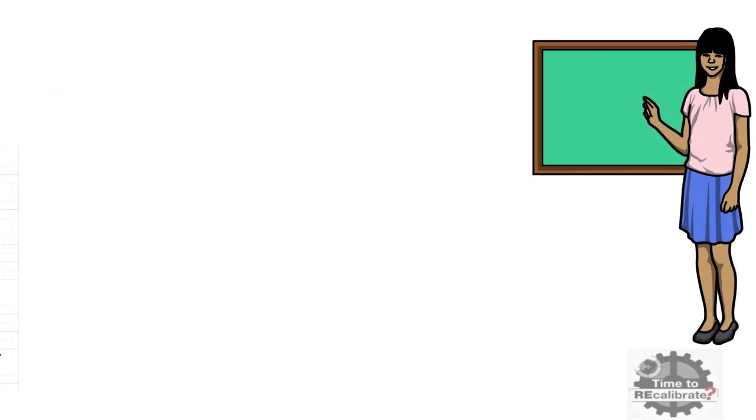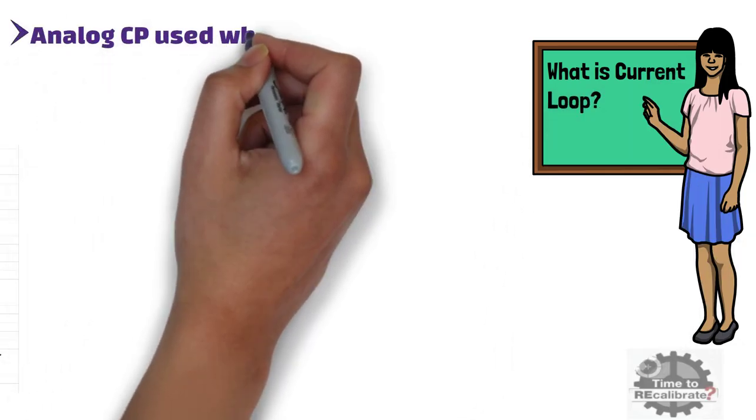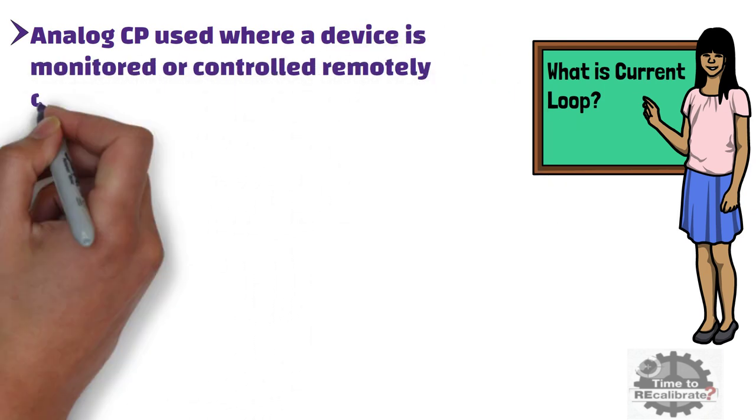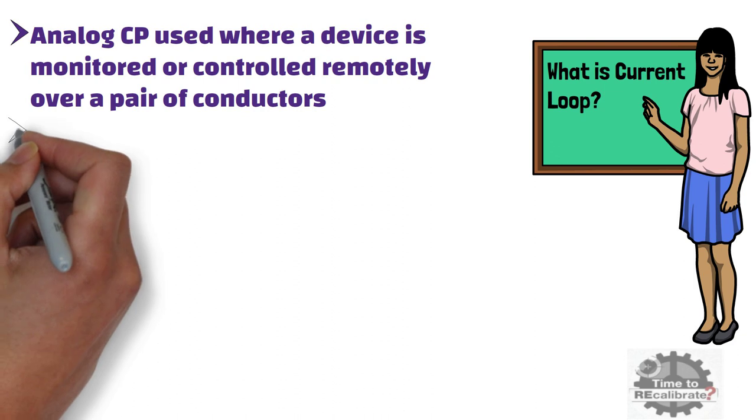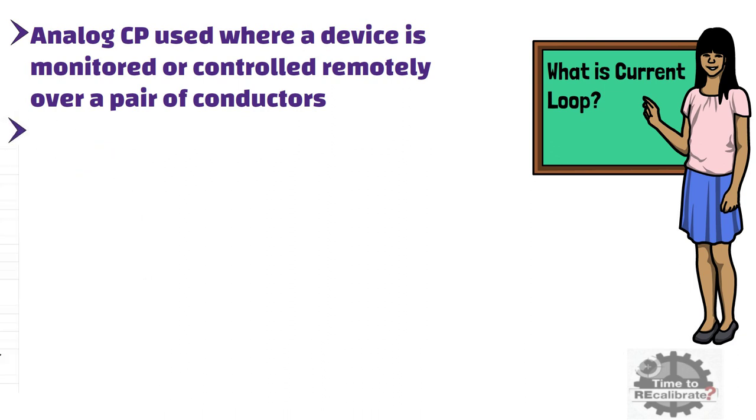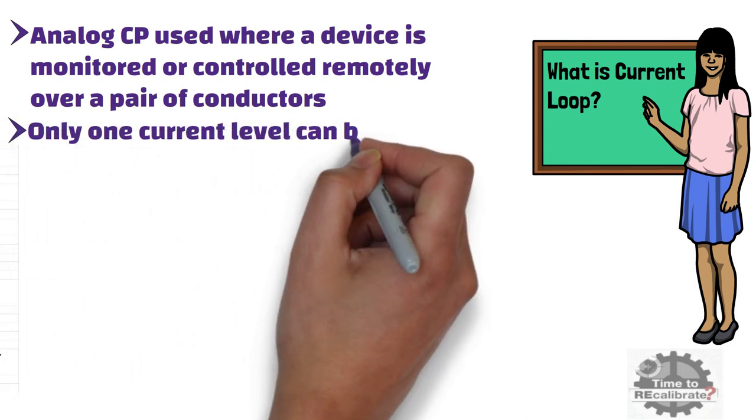First of all, let's start with what is the current loop. Analog current loop is used where a device is monitored or controlled remotely over a pair of conductors. In other words, analog current loop is used to connect process signals to controller in industry applications. And in analog current loop, only one current level can be present at any time.